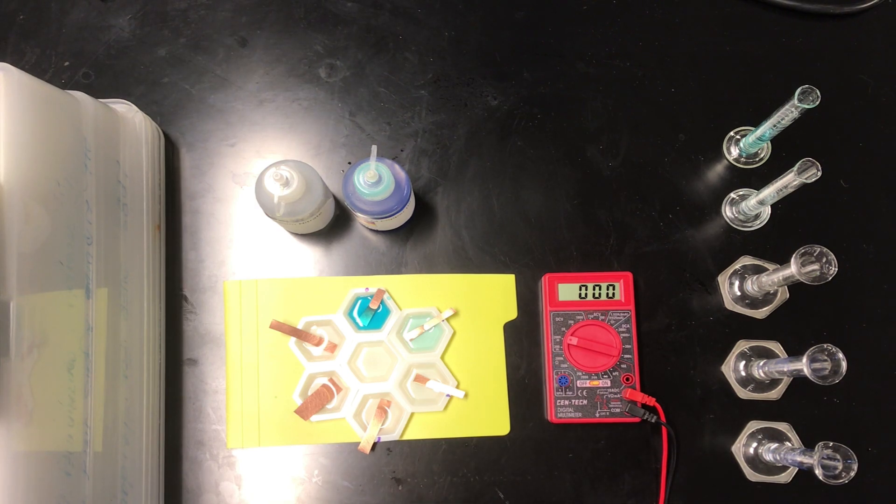Hello everyone. In this experiment we're going to investigate the properties of concentration cells, which are a type of galvanic cell in which the components of the cathode and anode are identical but they're present in different concentrations. I've gone ahead and set up a series of half cells in this honeycomb apparatus you see here, and let me talk a little bit about how this was set up.